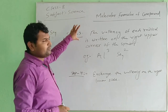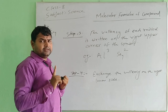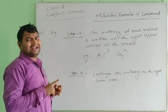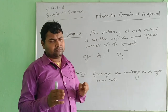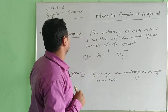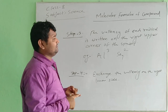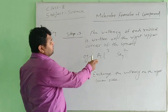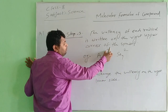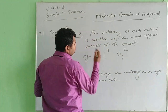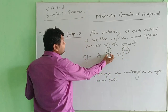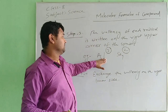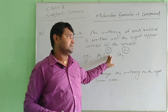Let's review once again. Step one: write the name of the compound. Step two: write the symbols of each element separately. Step three: write the valency of each radical at the top right corner of the symbol. So for ammonium sulfate — NH4 and SO4 — we write the valency at the top of each symbol. We must write the valency and also consider the valency of the oxide.